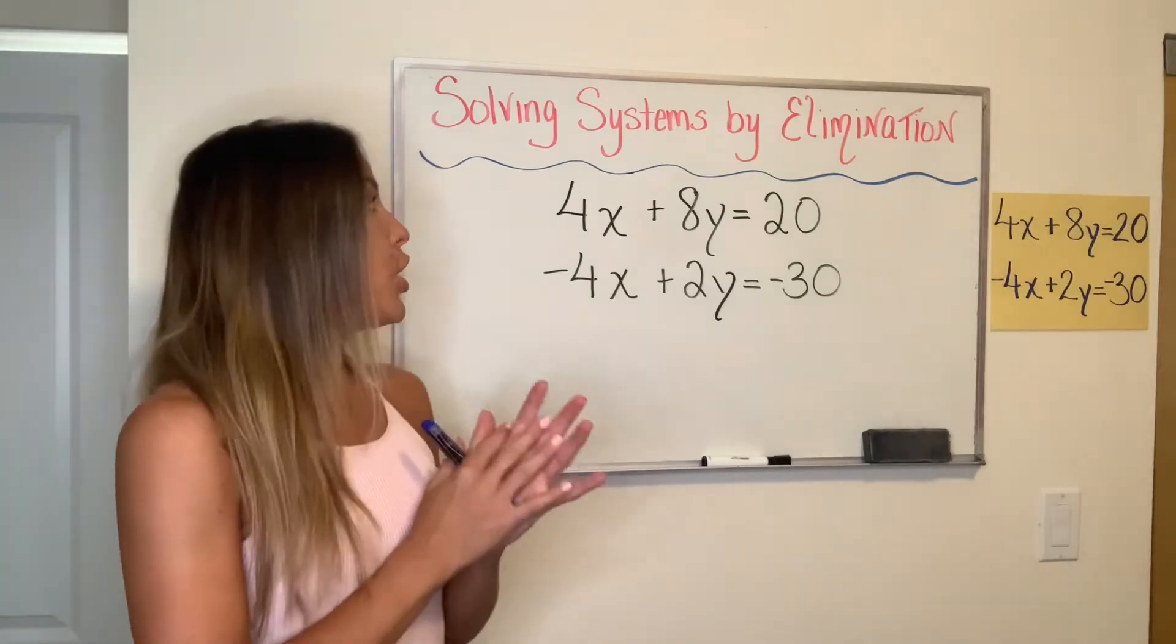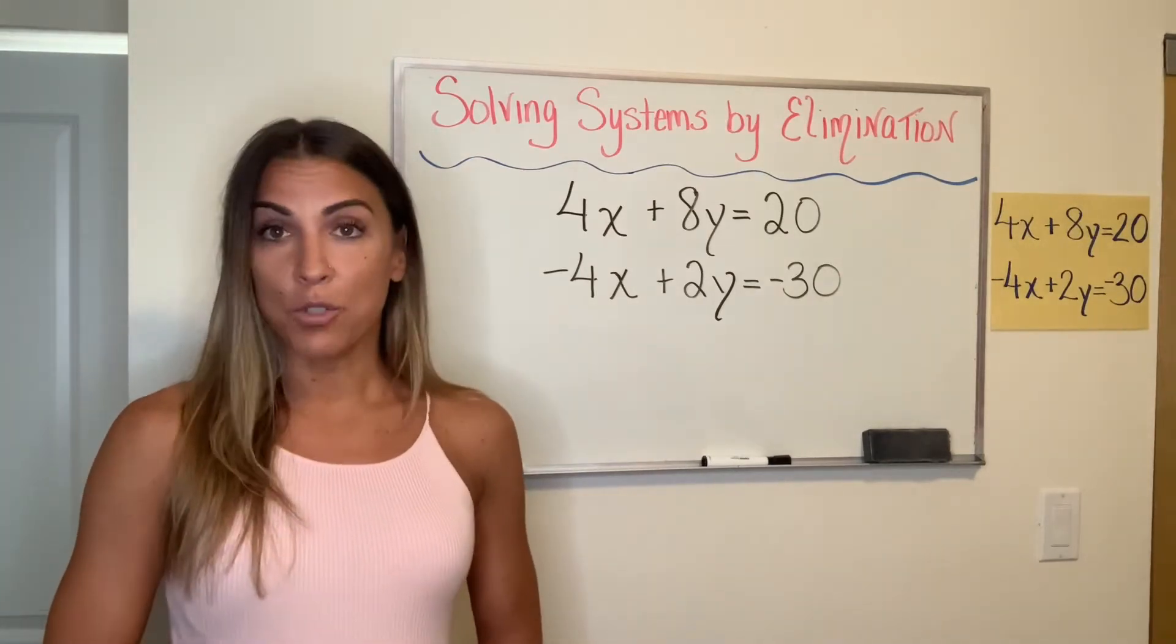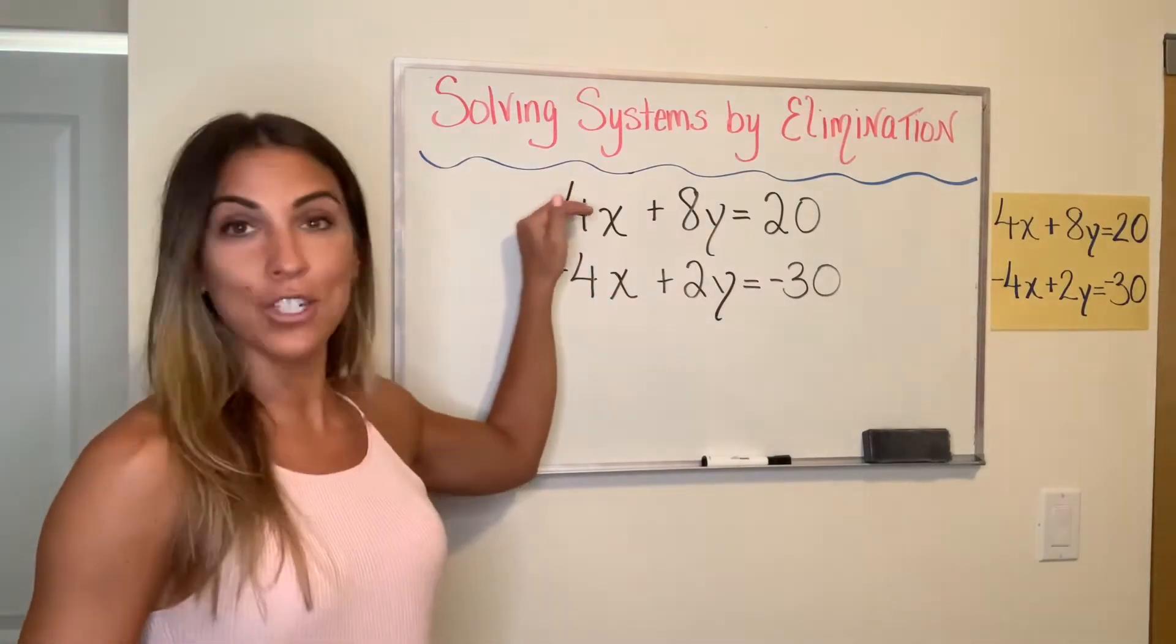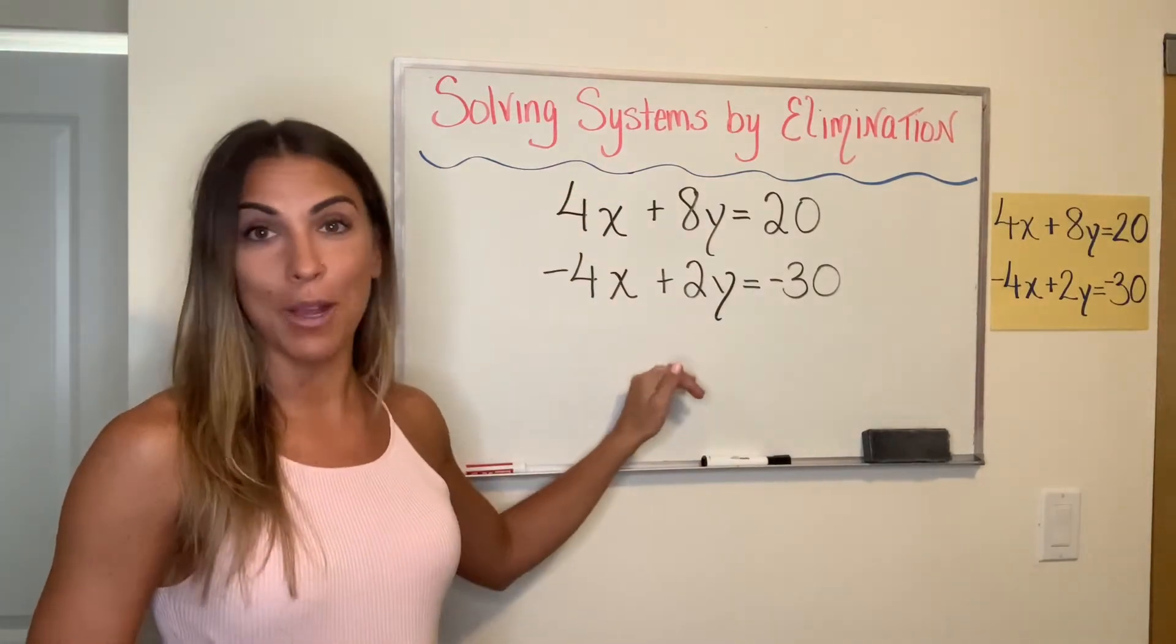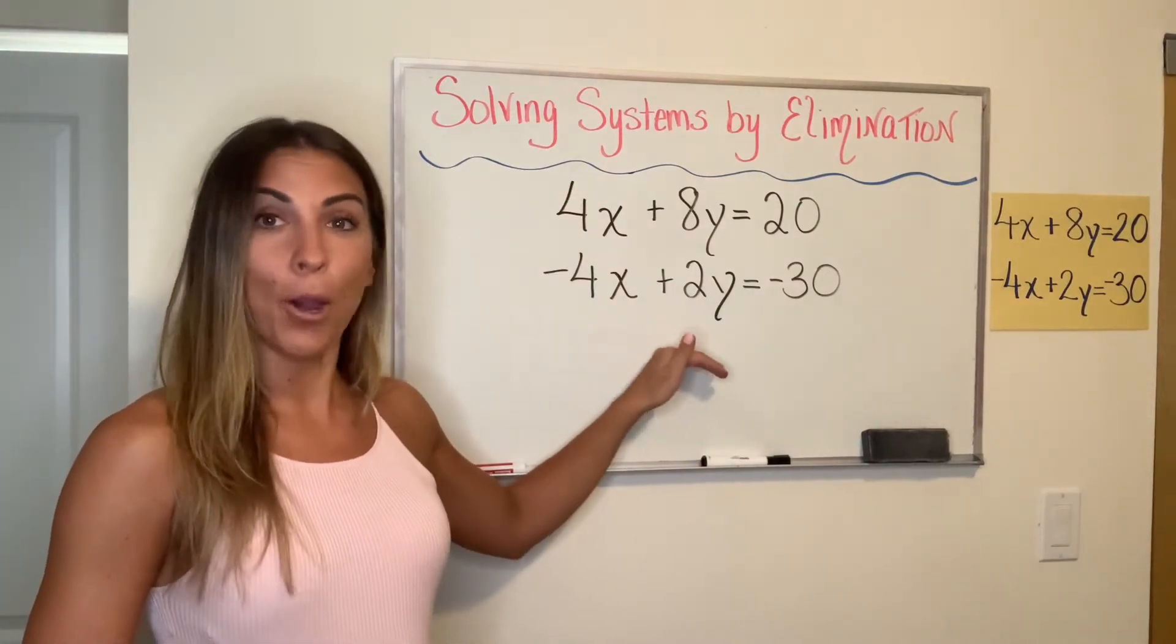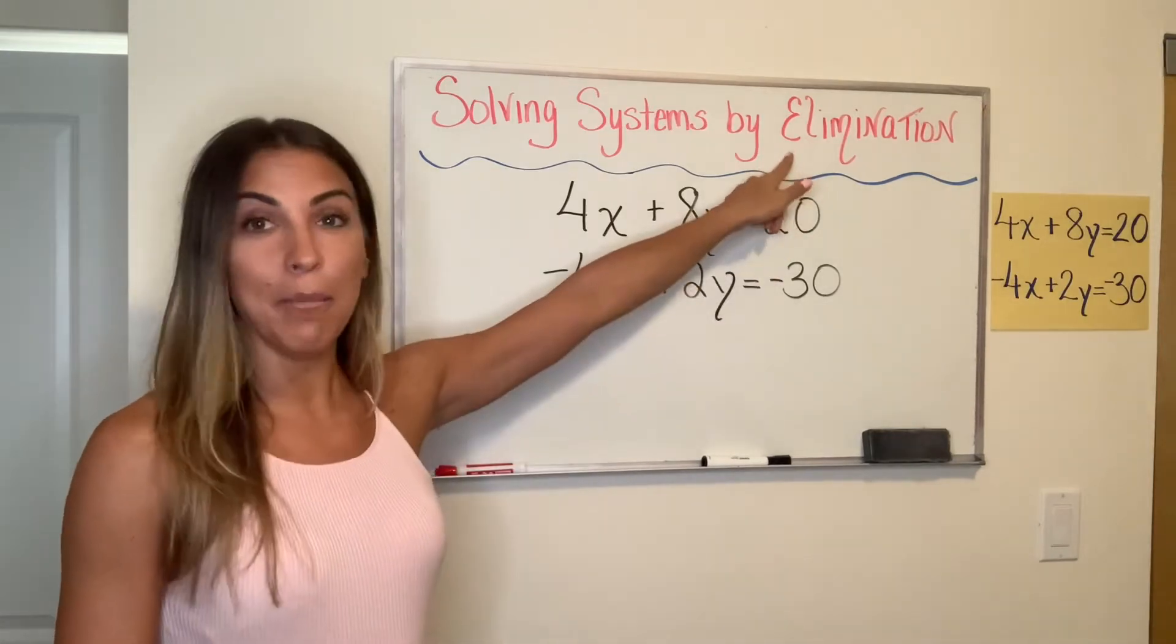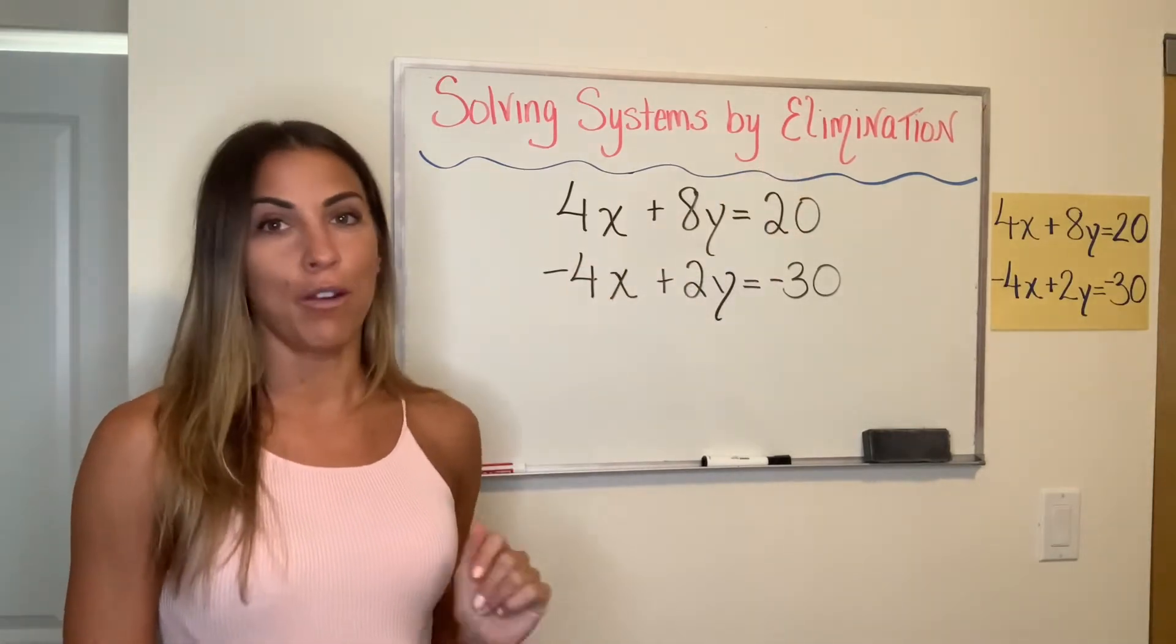So here's what it means. You're just going to add or subtract the entire equation on the top with the entire equation on the bottom. And the purpose of doing this is to eliminate one of the variables very quickly.